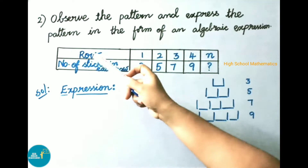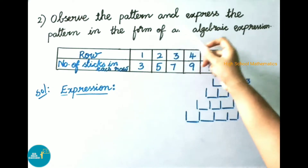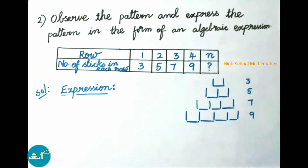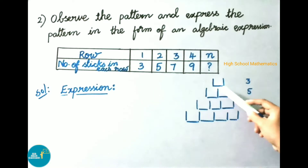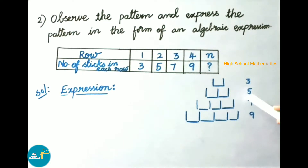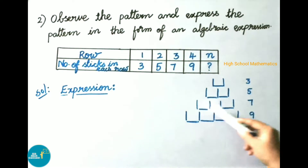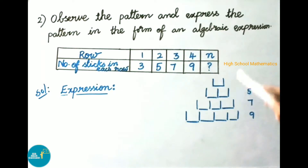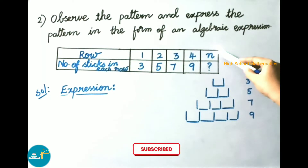Question number two: observe the pattern and express it in the form of an algebraic expression. For one row, they need 3 matchsticks; for two rows, 5 matchsticks; for three rows, 7 matchsticks; for four rows, 9 matchsticks. We need to find how many matchsticks are required for n rows.